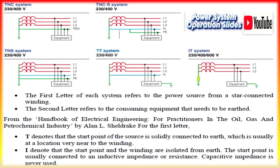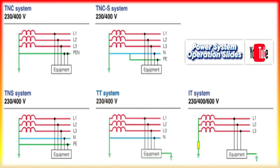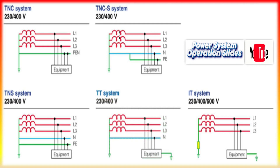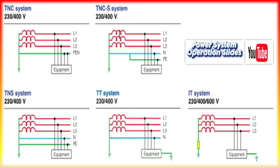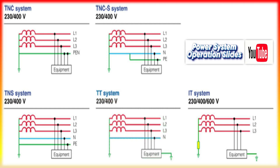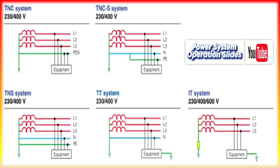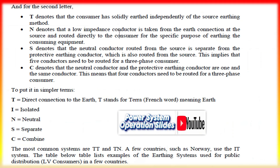TT system — what it means: in a TT system, the neutral of the supply transformer is directly connected to earth at the source, and critically, the exposed conductive parts like metallic casings and equipment enclosures at the consumer's installation have their own independent, local earth electrodes. How it works: this independent consumer earth means that if a fault occurs — for example, a phase-to-earth fault — the fault current is directed to the local earth electrode rather than traveling back via the supply network.